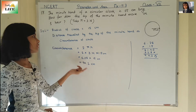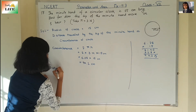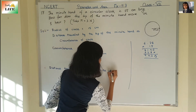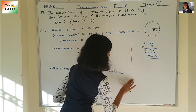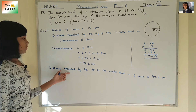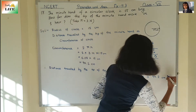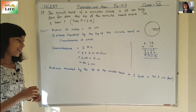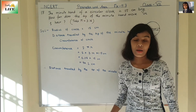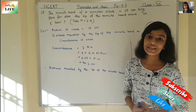The circumference is 94.2 centimeters. The distance travelled by the tip of the minute hand in one hour is 94.2 centimeters — this is the answer. With this we have completed the last question of exercise 11.3. In the next video I will be back with exercise 11.4. If you like this video, click the like button and subscribe. Thank you.